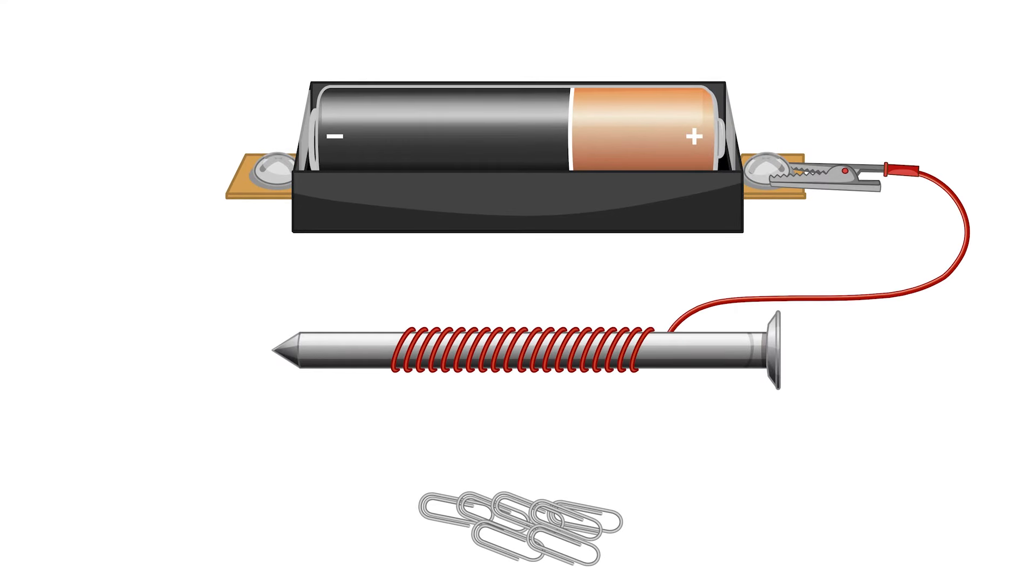Let's connect one end of the wire to the battery and wrap the wire around the nail. Now connect the other end of the wire to the other end of the battery.